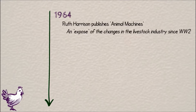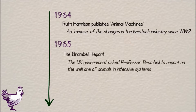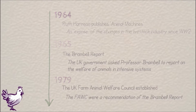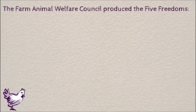The changes in public attitude caused the government to ask for a report on the welfare of animals in intensive systems, and Professor Bramble then suggested the formation of a Farm Animal Welfare Council, who were founded in 1979. The Farm Animal Welfare Council produced what we now call the five freedoms, and these describe an animal's needs.